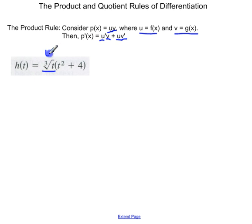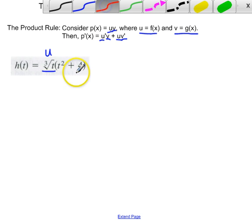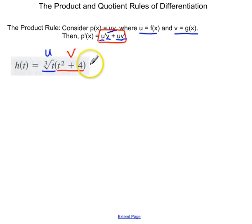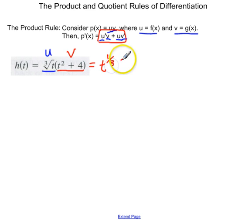We'll call the cube root of t u, and we'll call t squared plus 4 v, and we're just going to follow this pattern: u prime v plus u v prime. Before I do that, let's go ahead and rewrite this as t to the 1 third times t squared plus 4, because it's a lot easier to work with exponents.